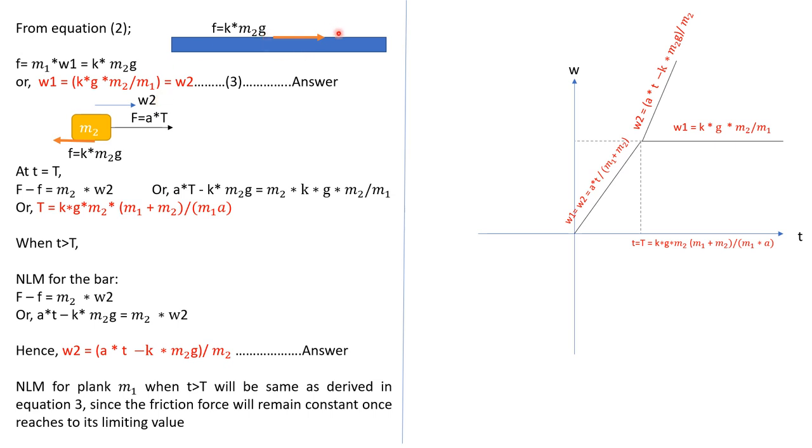Until capital T time, both plank and the bar are moving together. So acceleration w2 will be equal to w1. So this is the expression you got, the second equation.